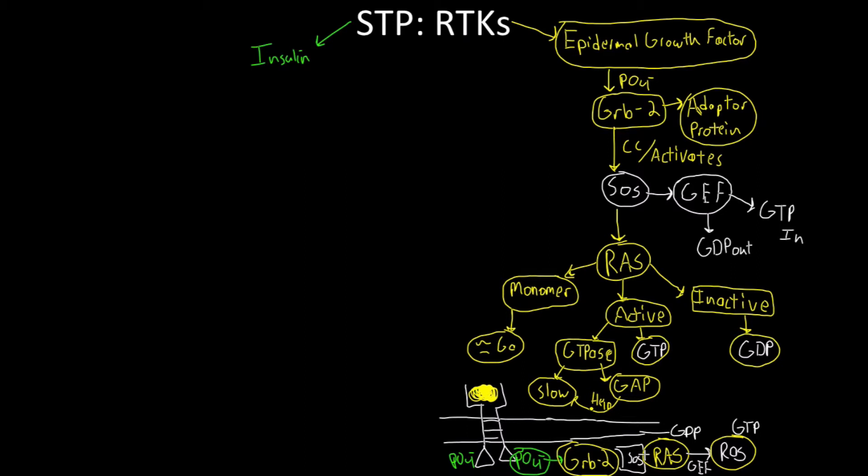To summarize the EGF pathway: it's a long series of events resulting in activation of a GTPase enzyme that cleaves GTP to stop the signal — very similar to what we saw with the G-protein. The difference is that RAS occurs further downstream in a cascade and has other proteins that can activate it and modify its rate.